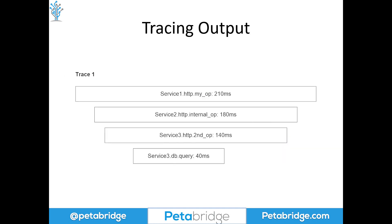This histogram output shows you how long each step of the operation took — for example, 40 milliseconds for a database query, 140 milliseconds for an HTTP request to service three. You can see the rough call chain and start times, and most tracing systems let you drill into each operation to get detailed data from within each process. Ultimately, the most powerful feature of distributed tracing is that it works transparently across all these different programming languages and frameworks.